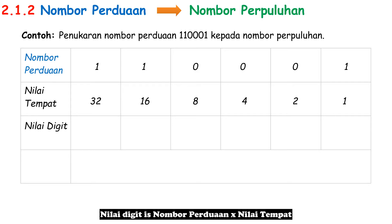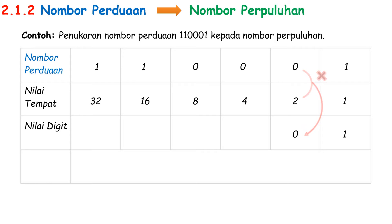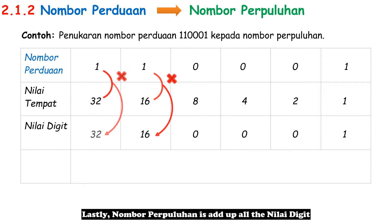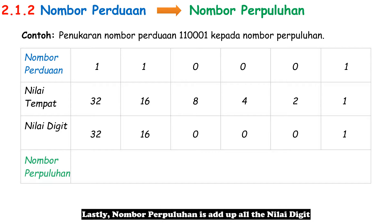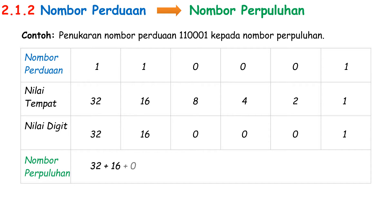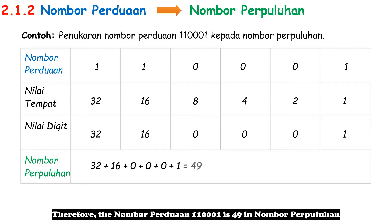Nilai Digit is Nombor Perduaan times Nilai Tempat. Lastly, Nombor Perpuluhan is the sum of all the Nilai Digit. Therefore, the Nombor Perduaan 1100001 is 49 in Nombor Perpuluhan.